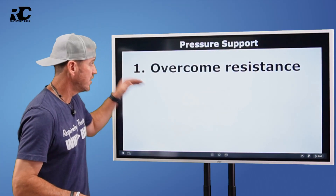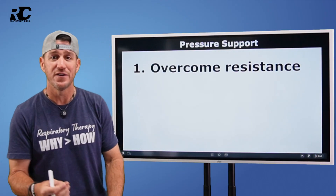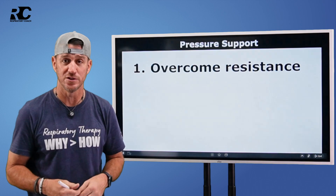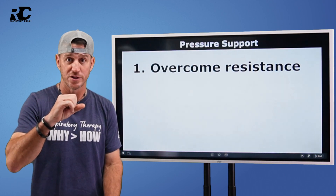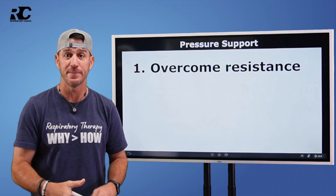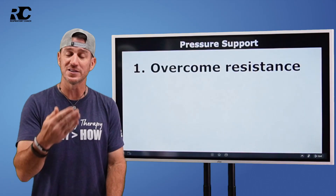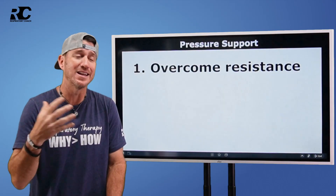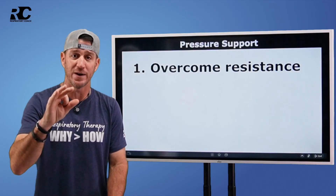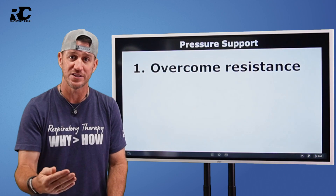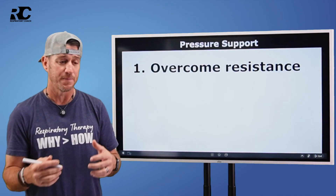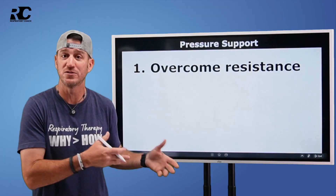Here's what you really want to know. Number one: pressure support overcomes the resistance of the artificial airway during spontaneous breathing. These patients often have an endotracheal tube, and that endotracheal tube is not large. It imposes resistance onto your patients, which can cause an increased work of breathing — just because they're breathing through a small airway. That could be tiring and taxing on our patients. We don't want that to happen, so we provide low levels of pressure support — five to eight centimeters of water pressure — to just overcome that resistance imposed by the artificial airway.